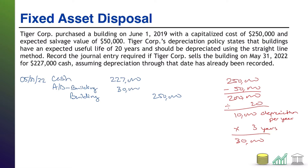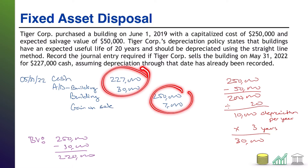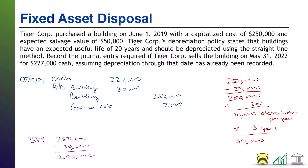Now figure out whether we broke even or have a gain or loss. Book value is historical cost minus accumulated depreciation: $250,000 minus $30,000 equals $220,000. We received $227,000 in cash — more than book value — so we have a gain of $7,000. We record that as gain on sale, $7,000. Check debits and credits: $257,000 in debits, $257,000 in credits. We are good to go.